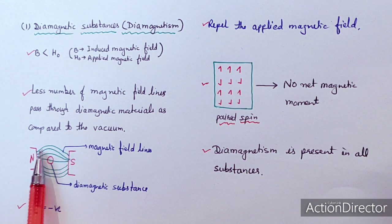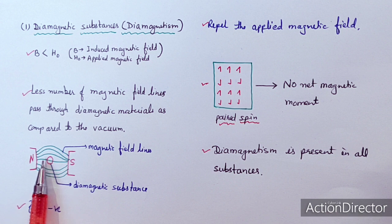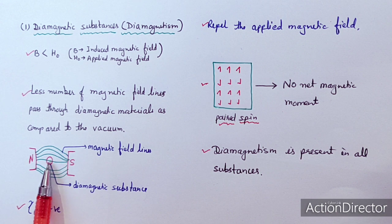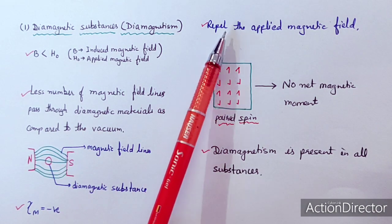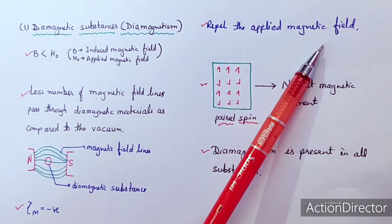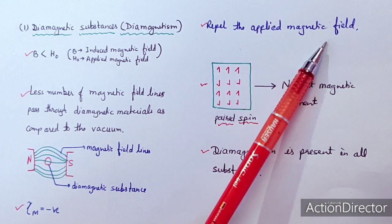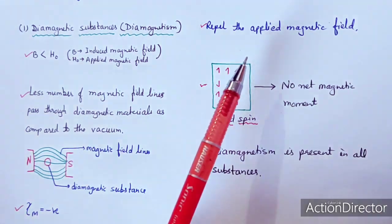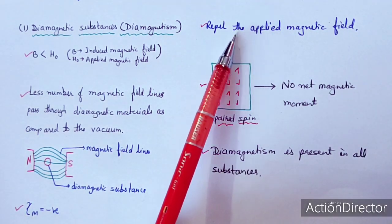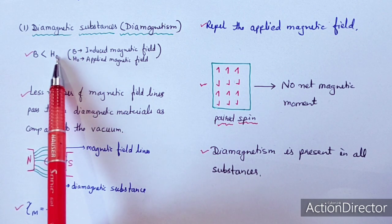In vacuum, more lines pass, but through the diamagnetic substance, fewer magnetic lines will pass. Diamagnetic substances repel the applied magnetic field. Because they repel the applied magnetic field, the induced magnetic field's magnitude will be less compared to the applied magnetic field.